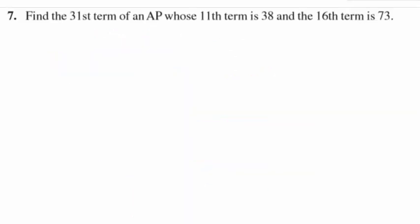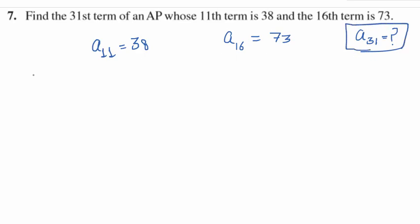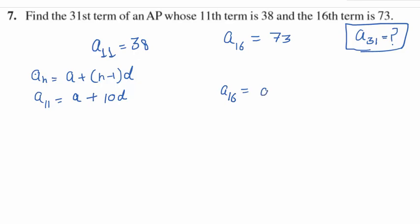The next question: Find the 31st term of an AP whose 11th term is 38 and 16th term is 73. Using the formula a_n equals a plus n minus 1 into d: substituting n equals 11 gives a plus 10d equals 38, and substituting n equals 16 gives a plus 15d equals 73. These are two equations in two variables, a and d.